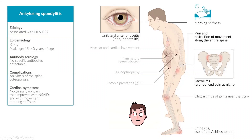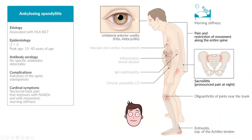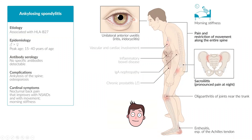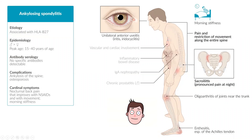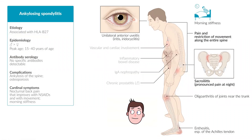Ankylosing spondylitis, or AS, is a disease of the spine. 'Spondylitis' means inflammation of the spine, and 'ankylosing' refers to fusion or rigidity of the spine — so anything ankylosing is fused and rigid. That's the main symptom, but let's go through some of the other things you can see in this disease.